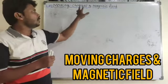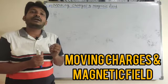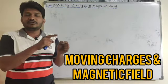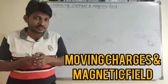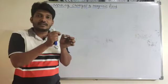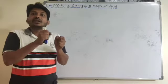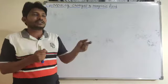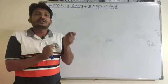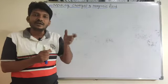Today we will be focused on moving charges and magnetic fields. In the last chapter, we discussed current electricity. We came to know that whenever a charge particle moves from one point to another, current gets produced. Along with the current, a magnetic field is also produced when the charge particle starts moving. This phenomenon is explained by Oersted. From the Oersted experiment, we know that a current-carrying conductor can produce a magnetic field.